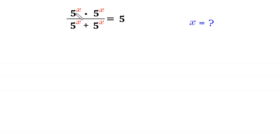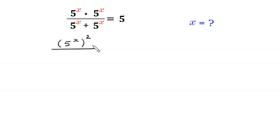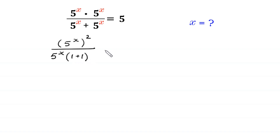5 to the power x times 5 to the power x becomes 5 to the power x squared, divided by — from 5 to the power x plus 5 to the power x, we can factor out 5 to the power x as a common factor, and in brackets left 1 plus 1, is equal to 5.